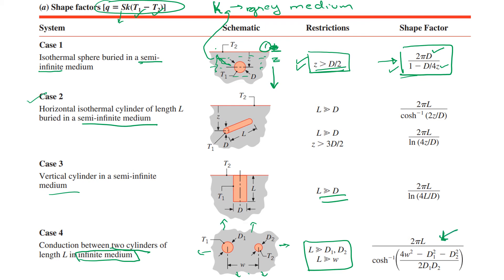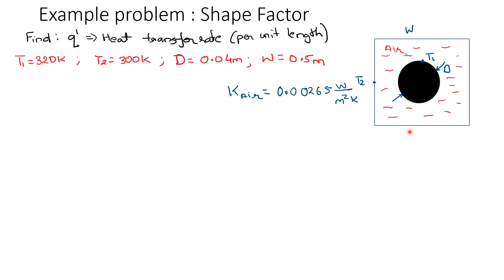After watching this video, I recommend you go to Table 4.1, go through all the cases, and make sure you understand what each case means. There are 11 cases listed, and whatever problems we solve or are asked on the exam will come from these 11 cases, so you don't have to calculate the shape factor yourself for any of the problems.